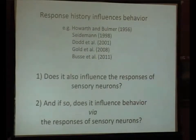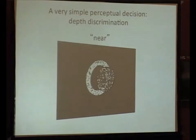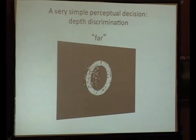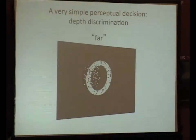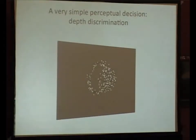The behavioral task is a depth disparity discrimination task where we train monkeys to discriminate whether the central disk in a random dot pattern is protruding relative to the surrounding annulus — called a near stimulus — or whether it's receding relative to the surrounding annulus. I'm schematically showing this in 2D using shading to give the impression of depth; the monkeys actually saw it in 3D. We used temporal noise to make the stimulus harder, and varied the noise level to titrate stimulus difficulty.